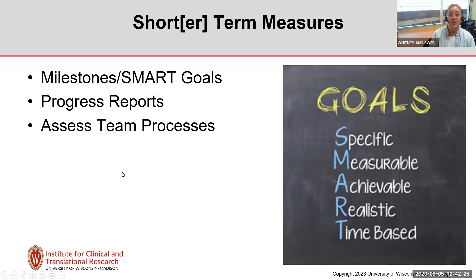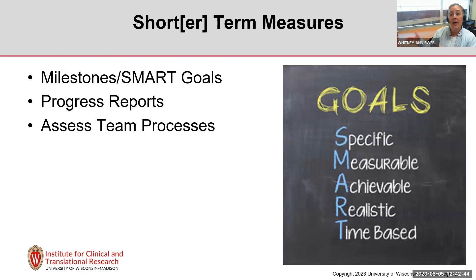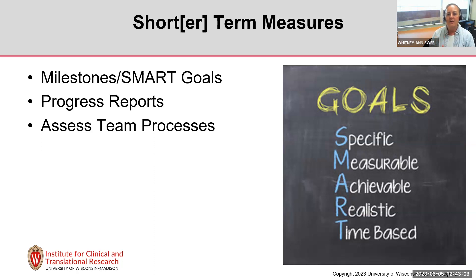Let's talk about actual measures — specifically shorter-term measures. One of the challenging things about evaluating a team is figuring out which evaluations to use. You want your overall impact at the end, but also measures along the way. I recommend SMART goals — Specific, Measurable, Achievable, Realistic, and Time-based — as a way to create those shorter-term milestones.